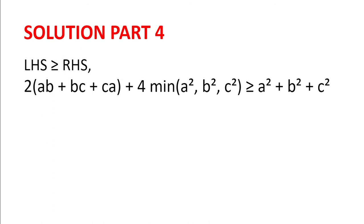So now we know from the AM-GM inequality that the left-hand side is greater or equal to the right-hand side. And so 2 multiplied by AB plus BC plus CA plus 4 multiplied by the minimum of A squared, B squared and C squared is greater or equal to A squared plus B squared plus C squared, as required.